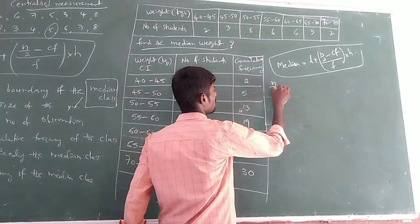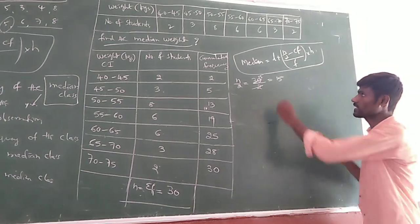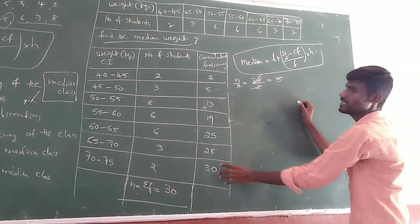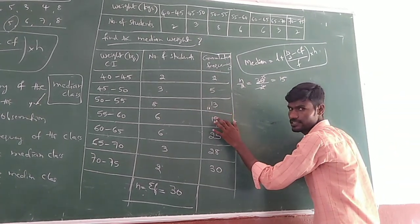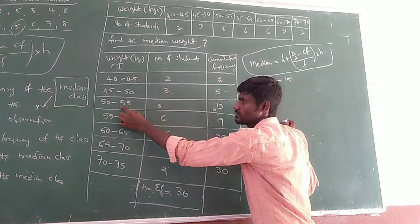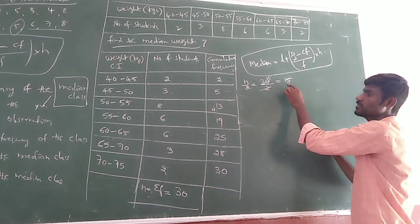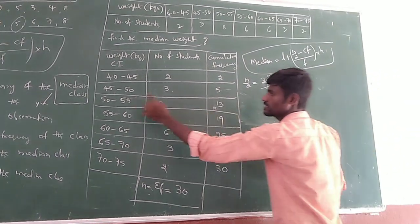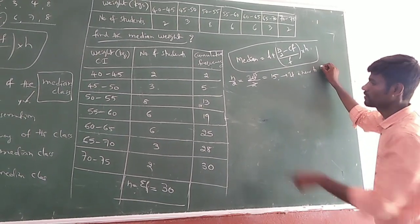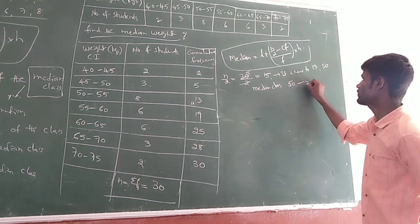This value 15 — in the cumulative frequency range, it is very close to either 13 or 19. But out of 13 and 19, it is closer to 13. So the class interval opposite to cumulative frequency 13 is taken as the median class. That is 50–55. The median class is 50–55.